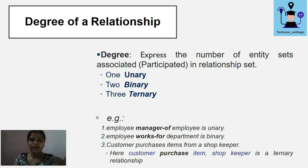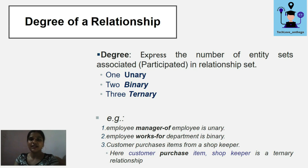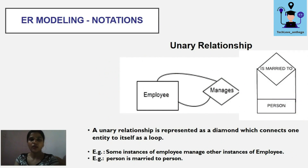An example of a ternary relationship is 'customer purchases item from shopkeeper.' Here, customer, item, and shopkeeper are three entity sets participating in the relationship. A ternary relationship is one where three entity sets are participating.